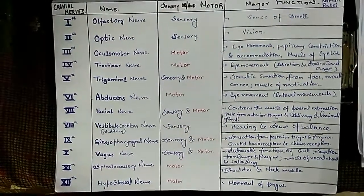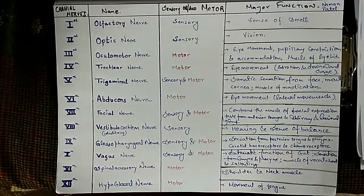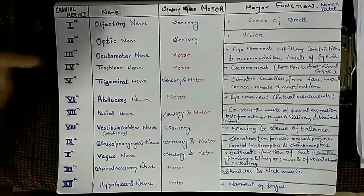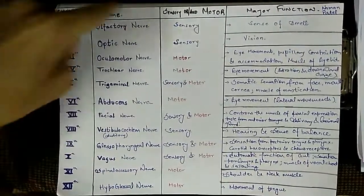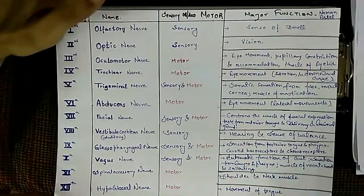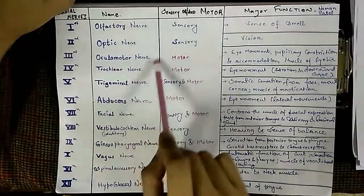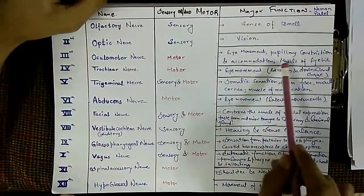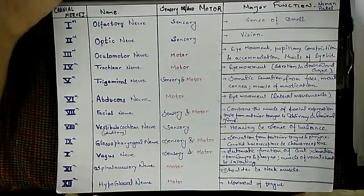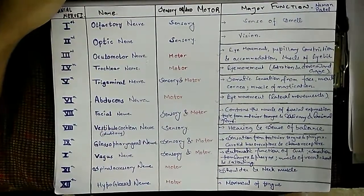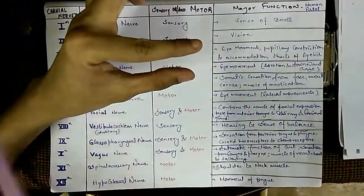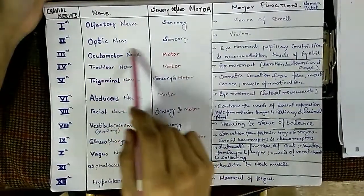The third cranial nerve is the oculomotor nerve, which is a motor nerve. The CNS sends information and tells this nerve to act on a particular area. The oculomotor nerve is responsible for the muscles of the eyelid — for example, if there is a snowstorm, the eyelid will constrict to leave only a slit-like space, and this function is governed by the oculomotor nerve.